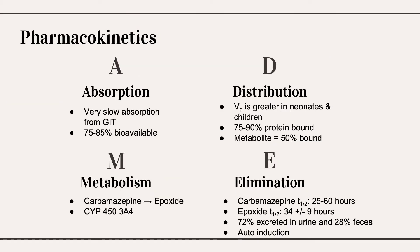Now that we have discussed the mechanism of action, I wanted to discuss the pharmacokinetics of the drug. Like many drugs, carbamazepine is absorbed from the GI tract, so anything affecting the physiology of the GI tract can affect absorption. The volume of distribution in adults is about 0.5 liters per kilogram, and is larger in neonates and even larger in children, indicating that higher doses are generally needed in younger populations to achieve peak concentrations. Additionally, carbamazepine is significantly protein-bound at 75-90%, and its metabolite epoxide is only about 50% protein-bound, so it can enter cells much more efficiently.